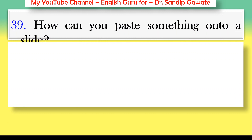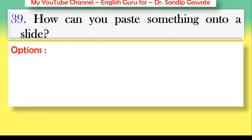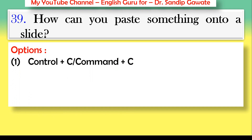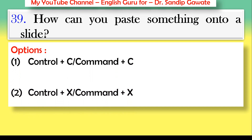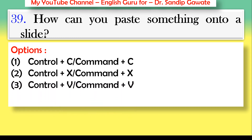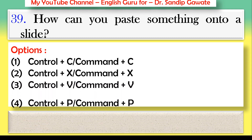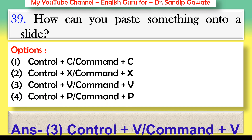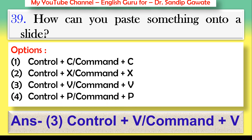Question 39: How can you paste something onto a slide? Options: Ctrl+C or Command+C, Ctrl+X or Command+X, Ctrl+V or Command+V, or Ctrl+P. The correct answer is option number three — Ctrl+V or Command+V.